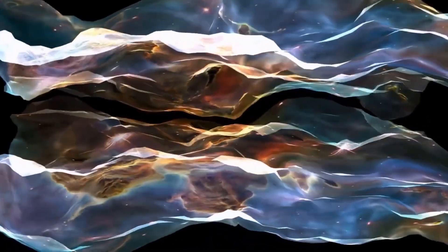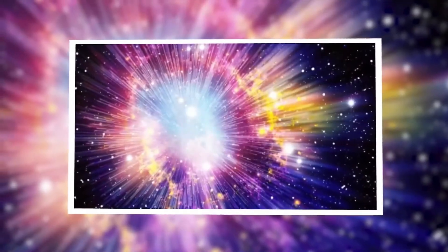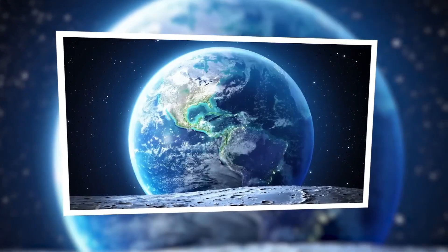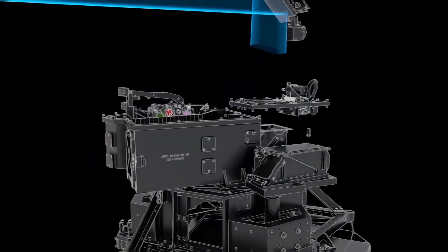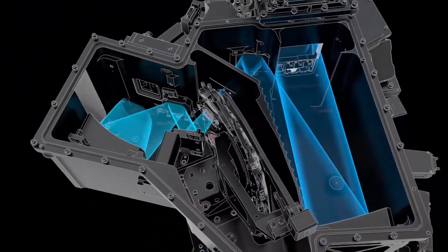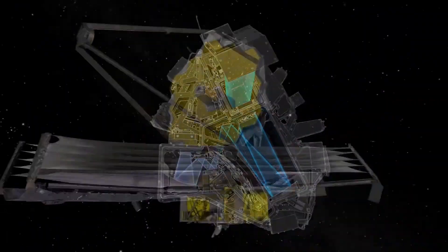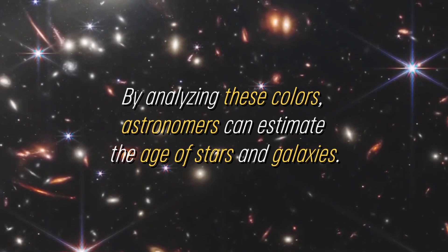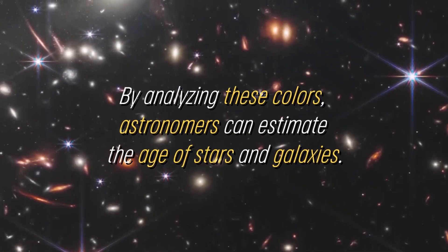But the James Webb Telescope is finding galaxies that look like they skipped the messy teenage phase. Some are compact, disc-shaped, with smooth structures that resemble modern galaxies like our Milky Way. Others are packed with stars that seem far too old for their place in the cosmic timeline.